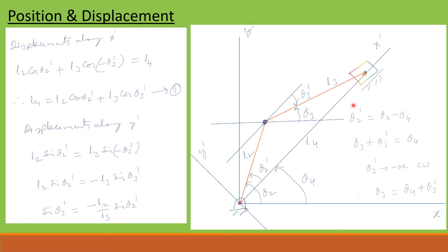In this picture, you can see that fixed link L4 is at angle theta 4 from horizontal, and crank is at angle theta 2 from horizontal. We consider this angle theta 2 prime, so theta 2 prime can be written as theta 2 minus theta 4. Similarly, the coupler angle is theta 3, and we consider theta 3 prime such that theta 3 plus theta 3 prime equals theta 4. Since theta 3 prime is considered negative because it is clockwise, we can write theta 3 equal to theta 4 plus theta 3 prime.